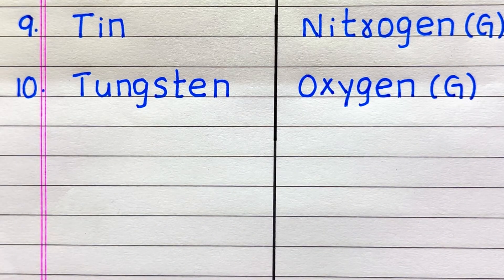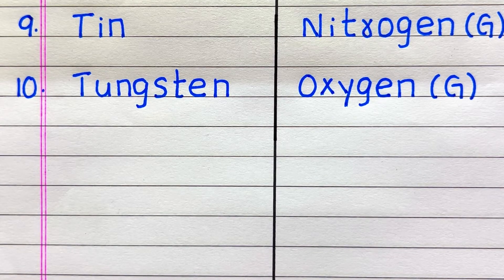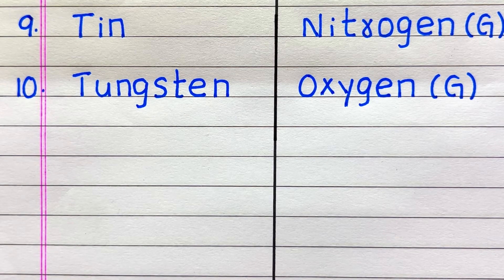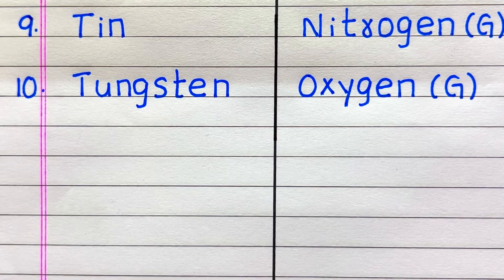9th example of a metal is tin, 10th one tungsten. All these metals are solids. Whereas 9th example of a non-metal is nitrogen, 10th one oxygen. Nitrogen and oxygen are gases.